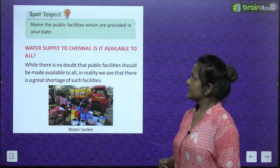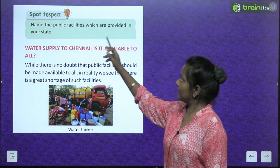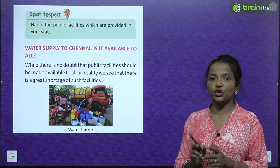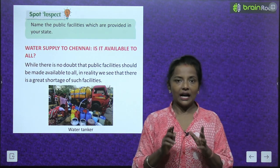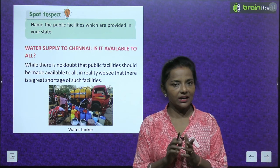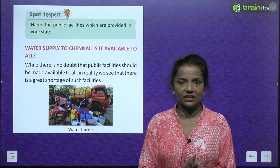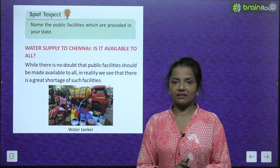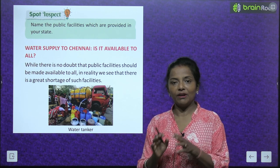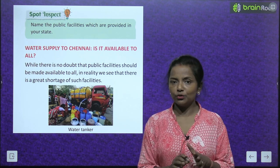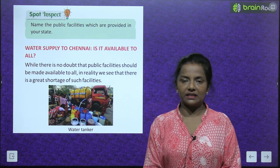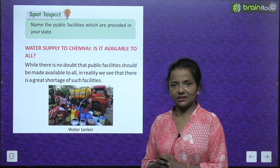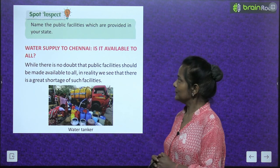Spot inspect: Name the public facilities which are provided in your state. Ab aap log kahan rehte hain, kis state mein rehte hain — jis bhi state mein rehte hain aap, vahan aapko kaun kaun si public facilities milti hain? That you have to write down here.